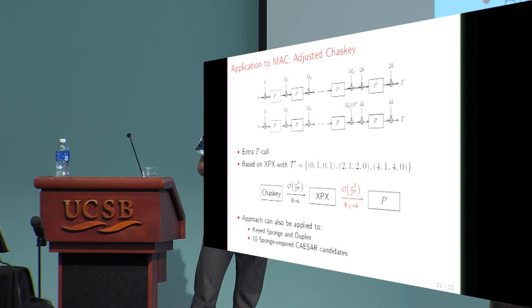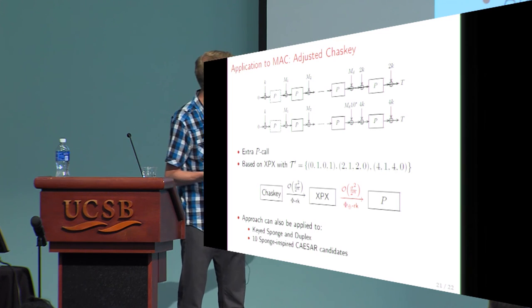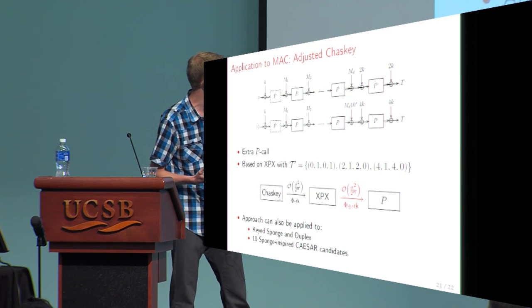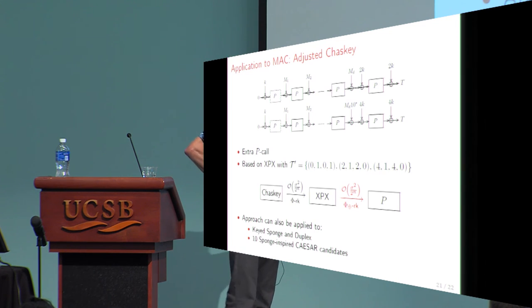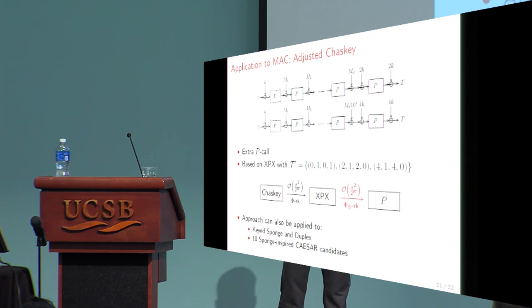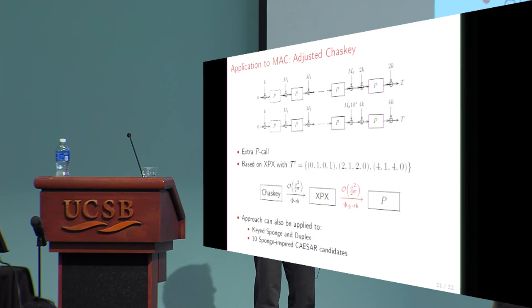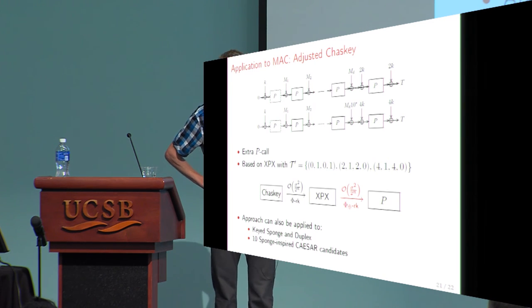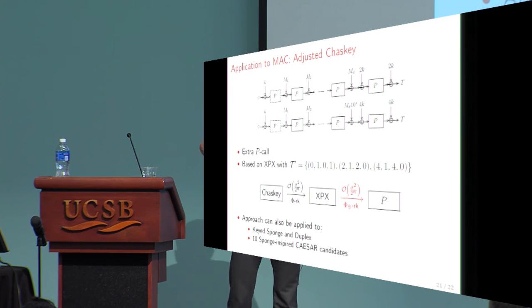Similar techniques could be applied to keyed sponges and keyed duplexes, since Chaskey can be seen as a member of these schemes. They can also be applied to various sponge-based CAESAR candidates — I mentioned 10 initial candidates, and I think three remain in the third round.